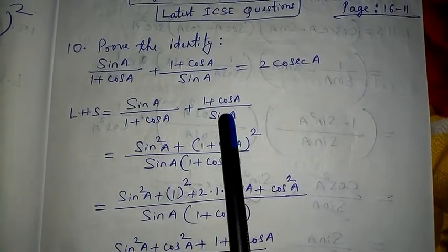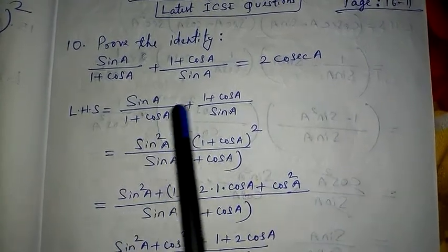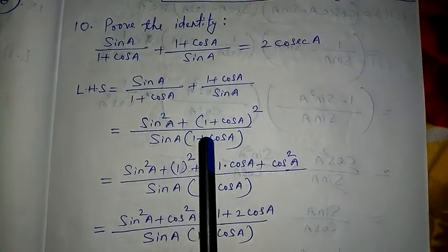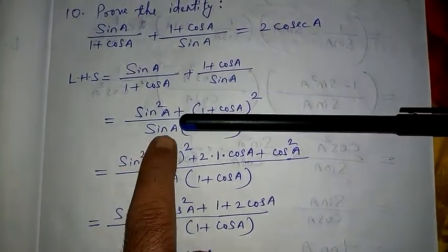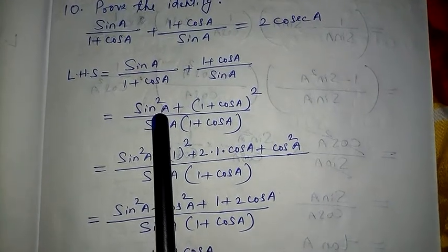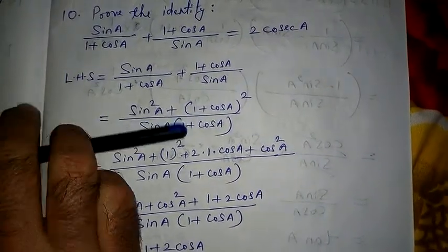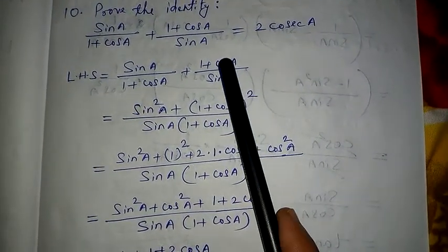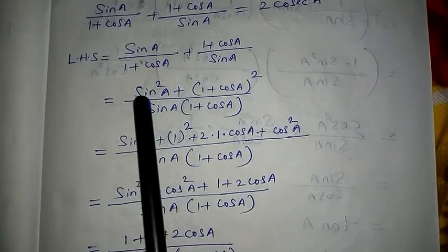The denominators are 1+cosA and sinA. The LCM will be sinA(1+cosA) — that means both identities combined as the LCM. After doing the LCM: the 1+cosA cancels on one side, so sinA remains and multiplies with sinA giving sin²A. Then sinA cancels on the other side, so 1+cosA remains and multiplies with 1+cosA giving (1+cosA)².